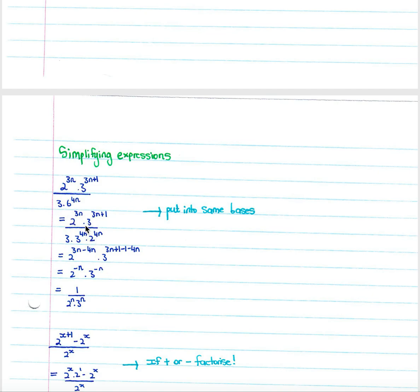We then go two to the three n divided by two to the four n, giving three n minus four n by our law, times three to the (three n plus one) minus (four n minus one), since there is an exponent of one on that three. Simplifying gives two to the negative n times three to the negative n, which equals one over two to the n times three to the n, applying the negative exponent law.